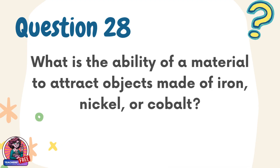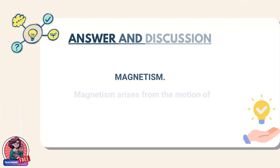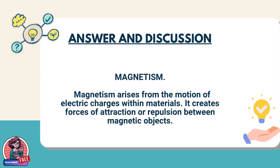Question 28. What is the ability of a material to attract objects made of iron, nickel, or cobalt? Answer: magnetism. Magnetism arises from the motion of electric charges within materials. It creates forces of attraction or repulsion between magnetic objects.